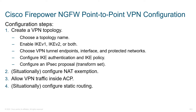We'll set up our IKE authentication policy — that is going to be pre-shared keys or digital certificates — as well as things like a Diffie-Hellman group. Finally, we'll build an IPSec proposal, which includes a transform set that defines how to protect our traffic. If necessary, we'll configure NAT exemption, allow VPN traffic within the ACP, and if needed, tweak our static routes.